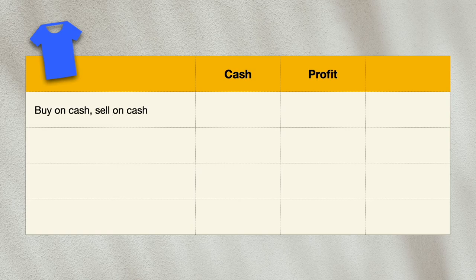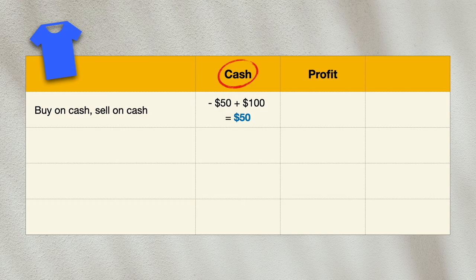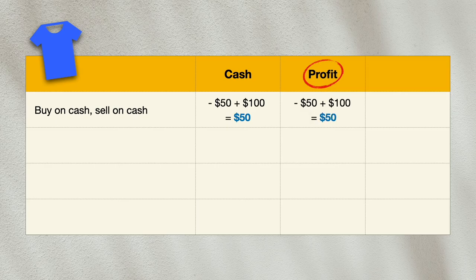First, let's look at what happens if we buy the t-shirt by paying cash and sell it for cash. The impact on cash flow: there will be a cash outflow of $50 and a cash inflow of $100, giving the business a surplus cash of $50. From an accrual accounting perspective, we record the cost of $50 and the revenue of $100 when the t-shirt is delivered to the customer, resulting in a profit of $50. Because the cash flow and the profit happen at the same time, the surplus cash and the profit are the same.